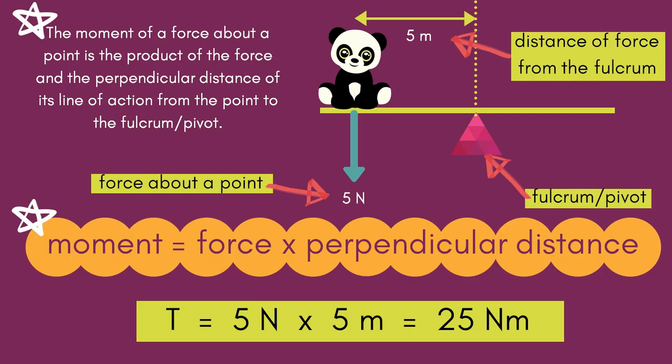The moment of a force about a point is the product of the force and perpendicular distance of its line of action from the point to the fulcrum or pivot.